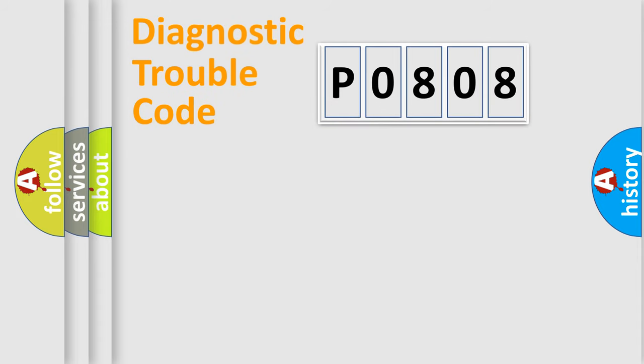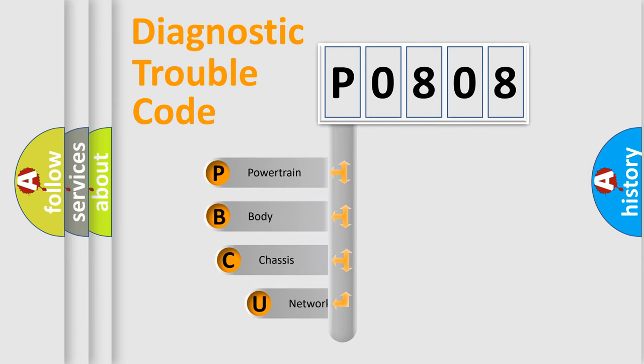First, let's look at the history of diagnostic fault code composition according to the OBD2 protocol, which is unified for all automakers since 2000. We divide the electric system of automobile into four basic units.